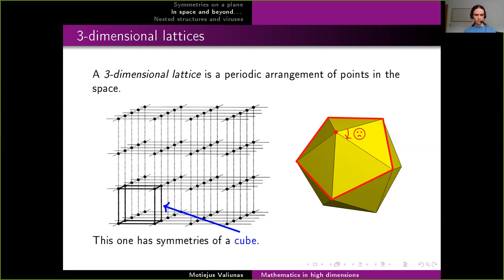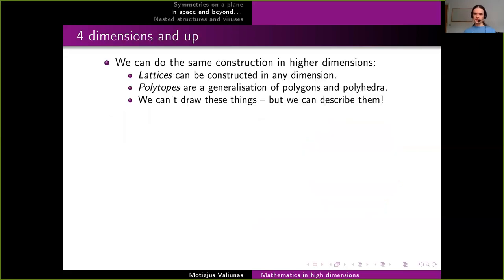So the question is: we look at something like a pentagon and saw that in two dimensions you cannot have any infinite arrangement that is symmetric under translations and the symmetries of a pentagon. In three dimensions it's the same thing. So what if we just keep adding dimensions — what happens then?